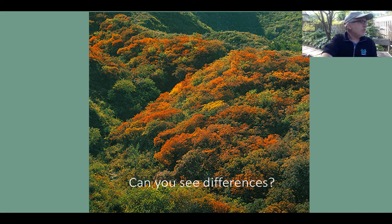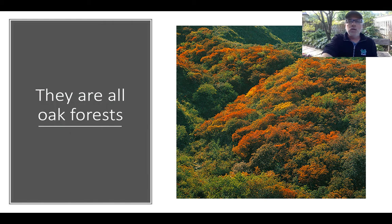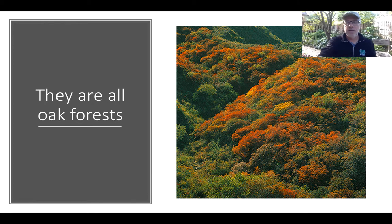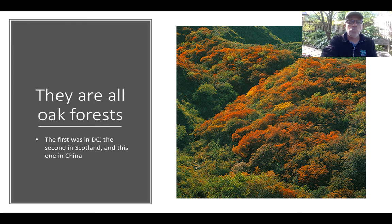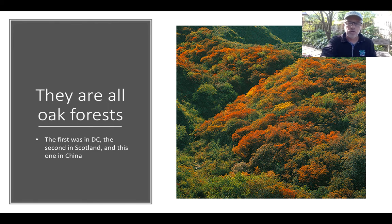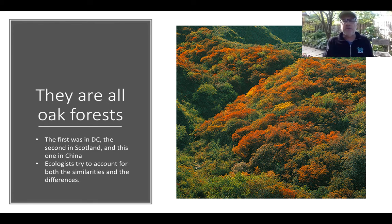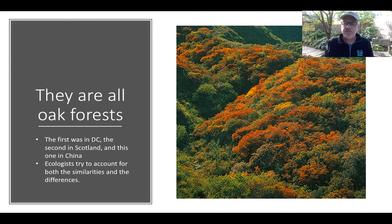So let me tell you what you were looking at. All of these are oak forests — they are all dominated by trees in the genus Quercus, which is the genus of oaks. The amazing thing is that these oak forests occur in Washington D.C. (the first one), in Scotland (the second one), and in China (the third one). Even though these forests are all oak forests, they have different species of oaks in them, and ecologists try to account for both the similarities and the differences in these forests.